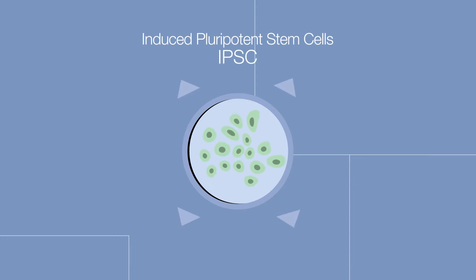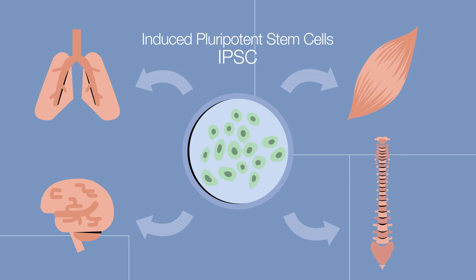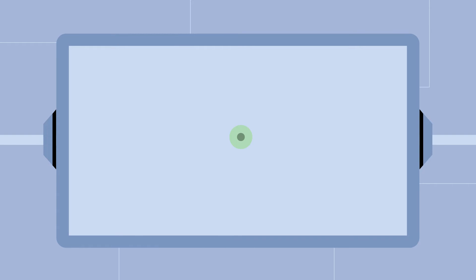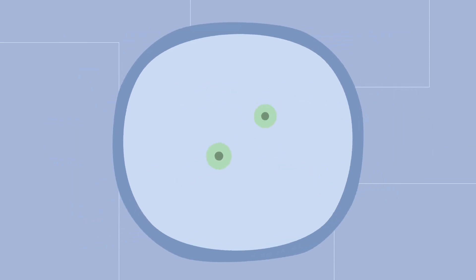The stem cells have the ability to generate any of the more than 200 cell types found in our body. Since the stem cells never stop dividing, we can create an endless source of opportunities, which comes in handy in research focusing on neurodegenerative diseases like ALS.